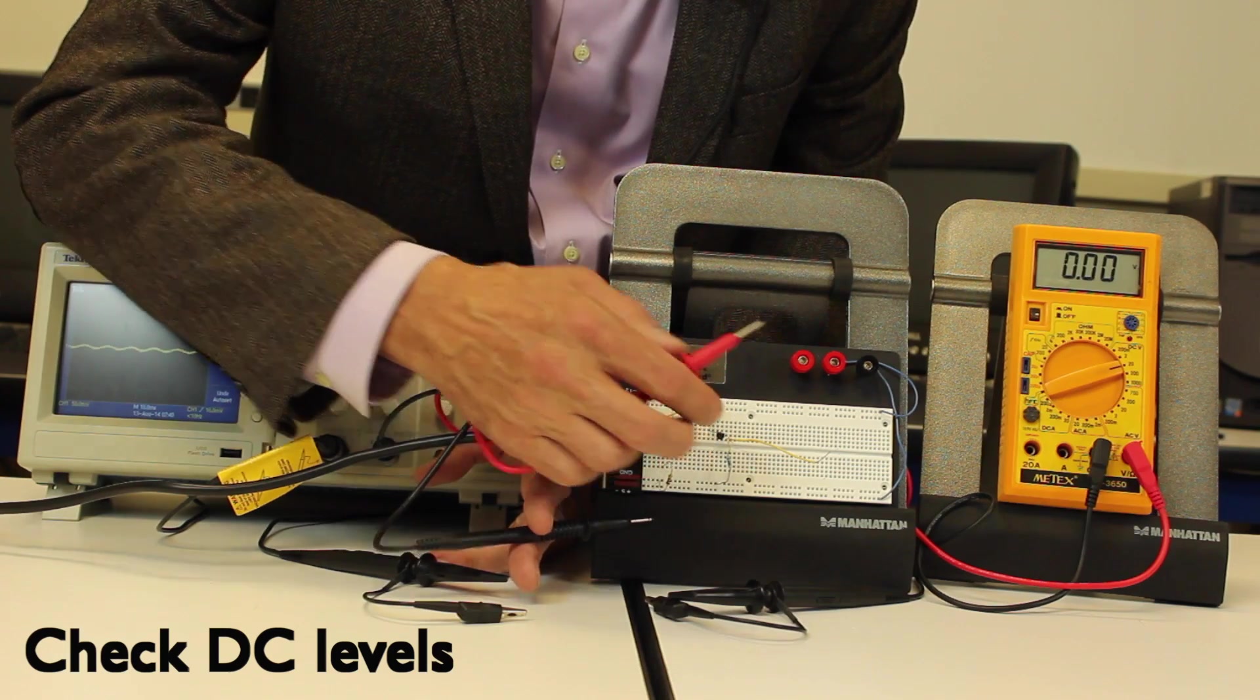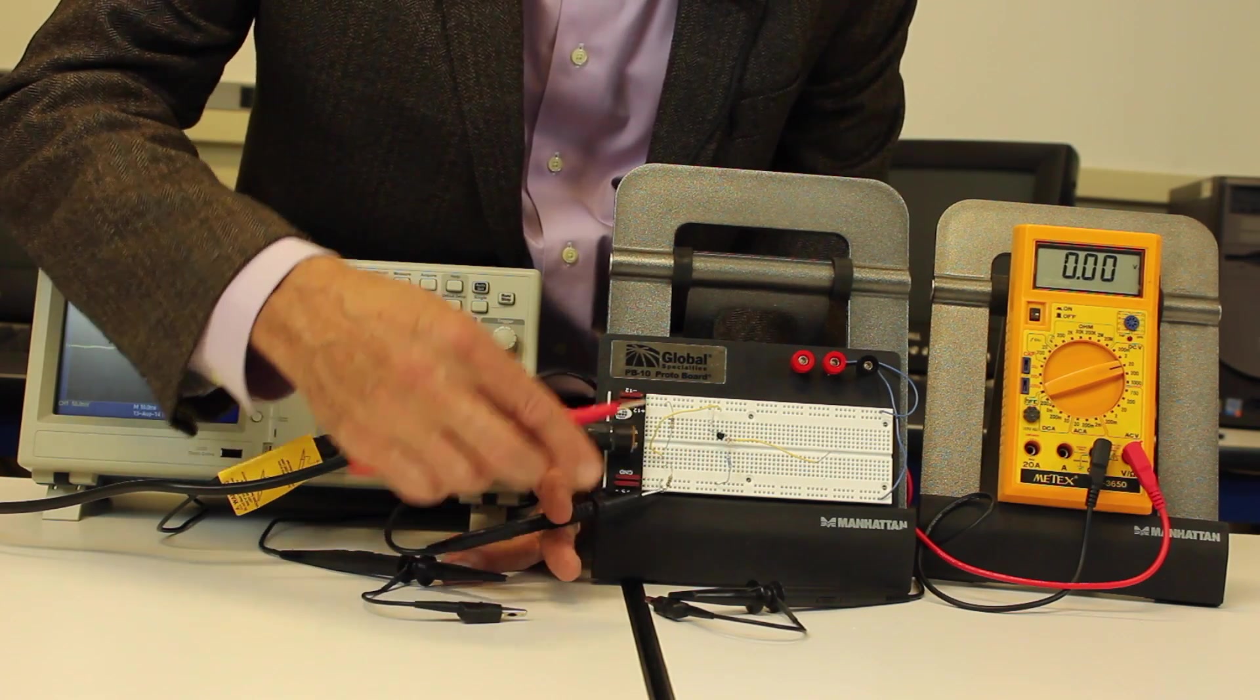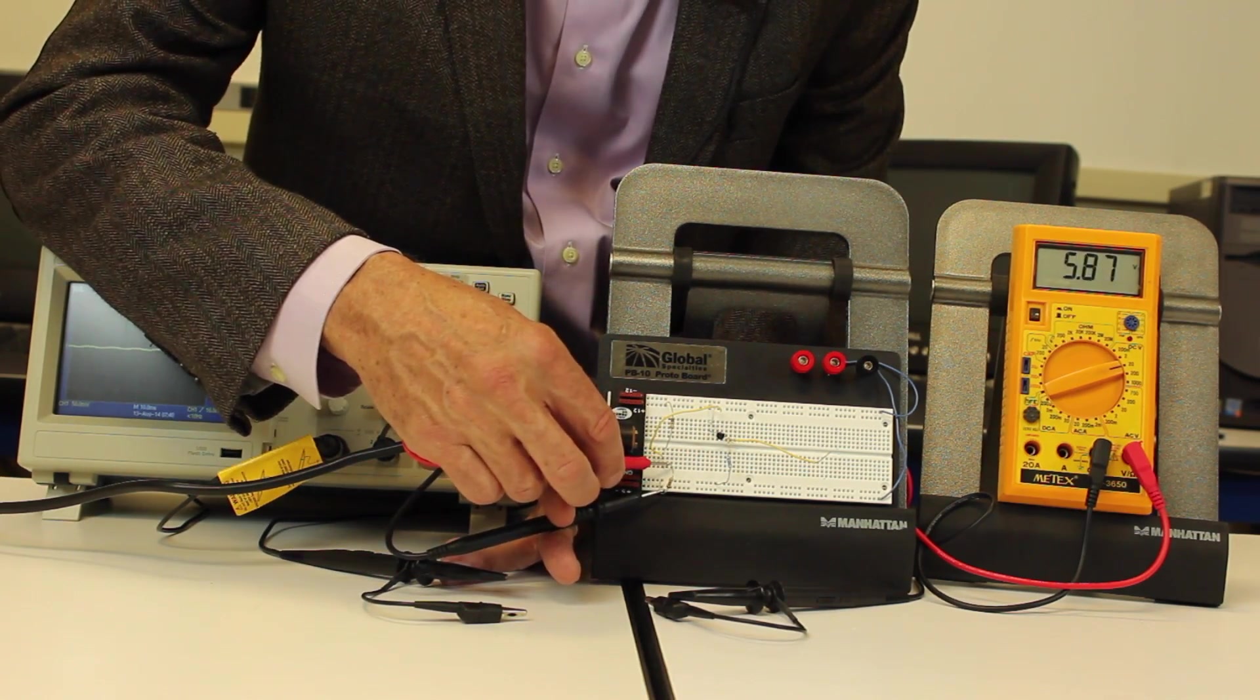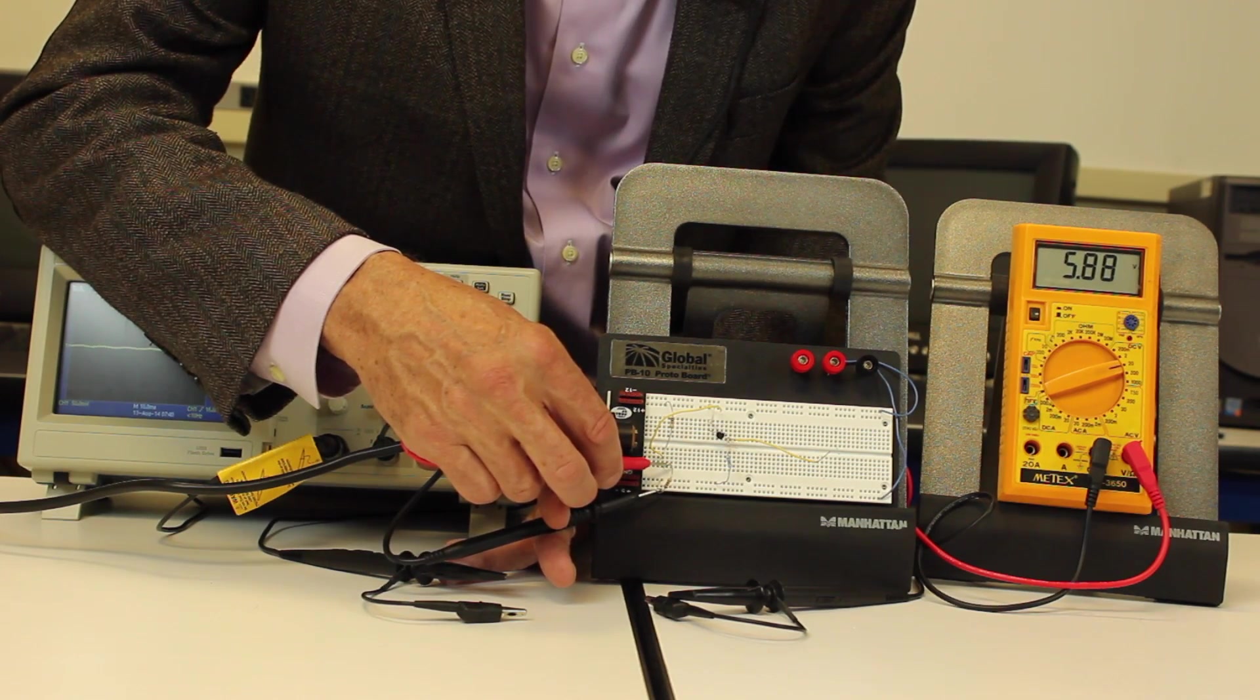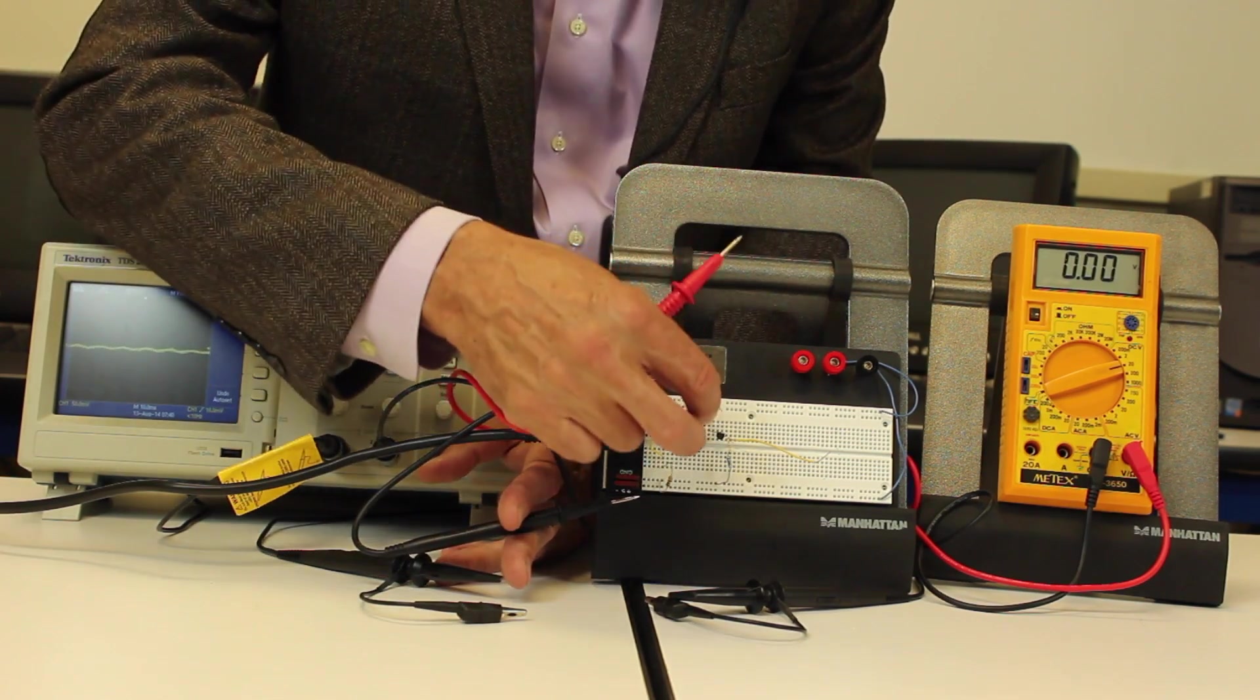Let me disconnect the transistor right now to just see what the voltage at the middle of the voltage divider is. 5.88, okay, so that's the voltage divider with nothing hooked on it.